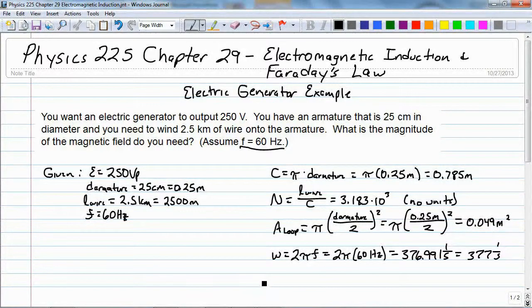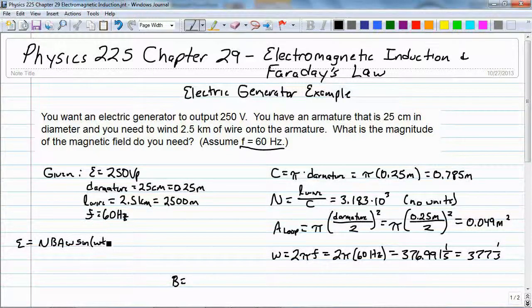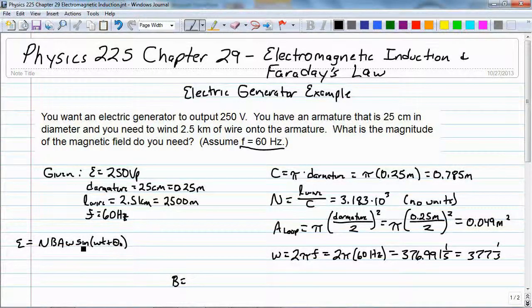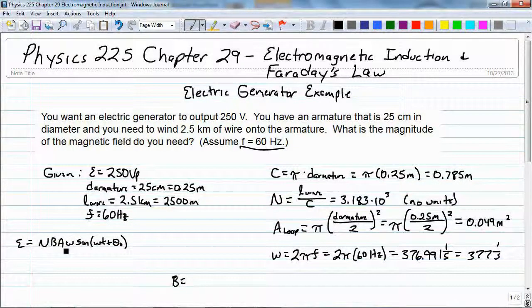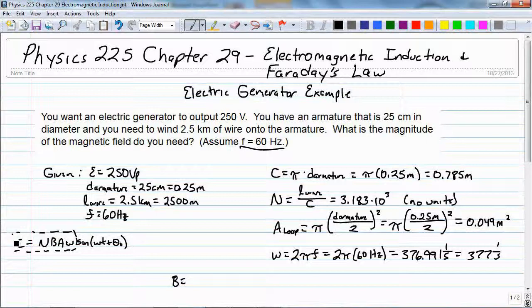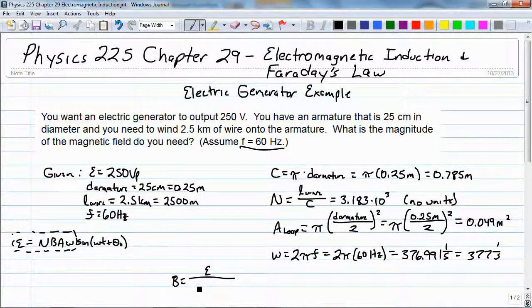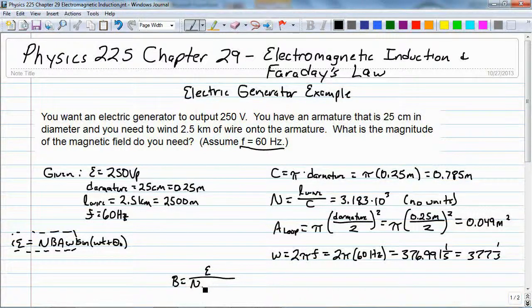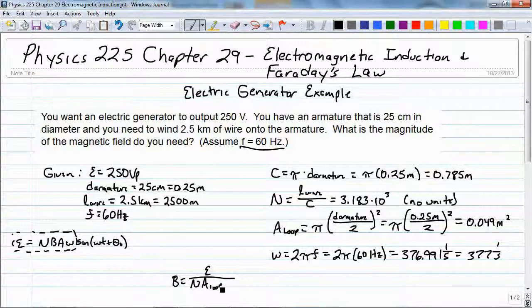And now I can find the magnetic field strength from the formula for a motor. Remember that that was E equals NbA omega sine omega t plus theta naught. I really am not worried about this sine function, I'm only worried about peak, so I just need to deal with this part. So B is just going to be induced voltage divided by the number of loops times the area of the loop times omega.